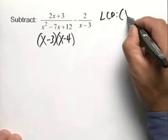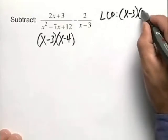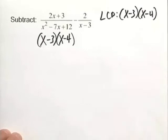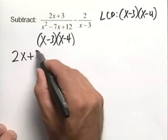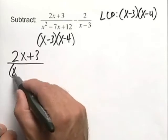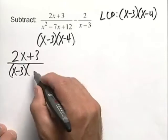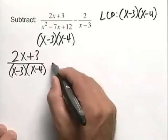For this particular problem, x minus 3 times x minus 4 is in fact our LCD. So we can leave our first fraction alone, 2x plus 3, all over that factored denominator. Then we're going to subtract the second rational expression,